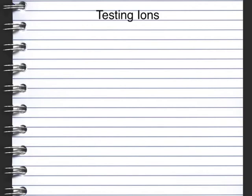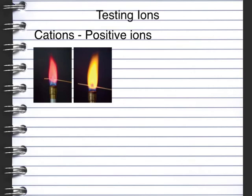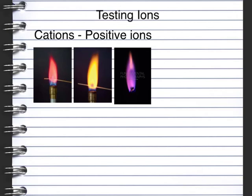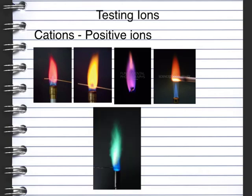As well as testing the anions we can test for the cations, the positive ions, using a flame test. Lithium gives a red flame, sodium gives an orange flame, and potassium gives a lilac flame. Calcium also gives an orange colour but it's more of a red-orange than sodium. Copper gives a blue-green coloured flame. Remember to clean the metal loop with acid and a clean Bunsen flame before and after each different metal compound.